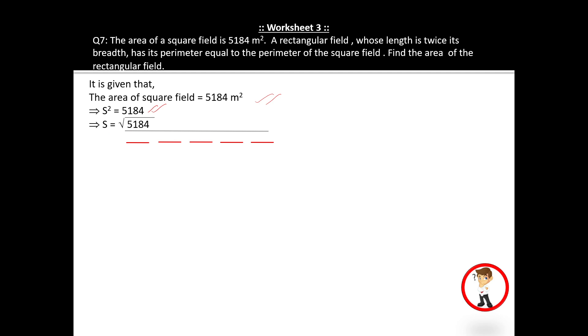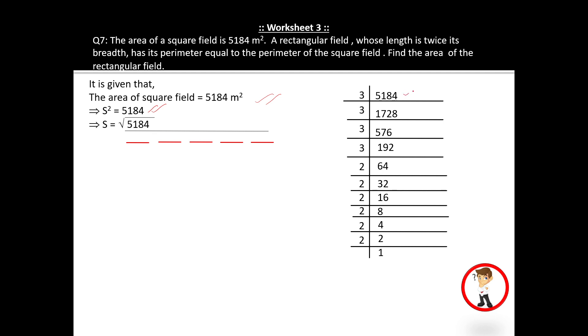Now we will find the square root of 5184. We will follow the same procedure. If you observe, 3 is coming 4 times and 2 is coming 6 times. So write 5184 in the form of prime factors.